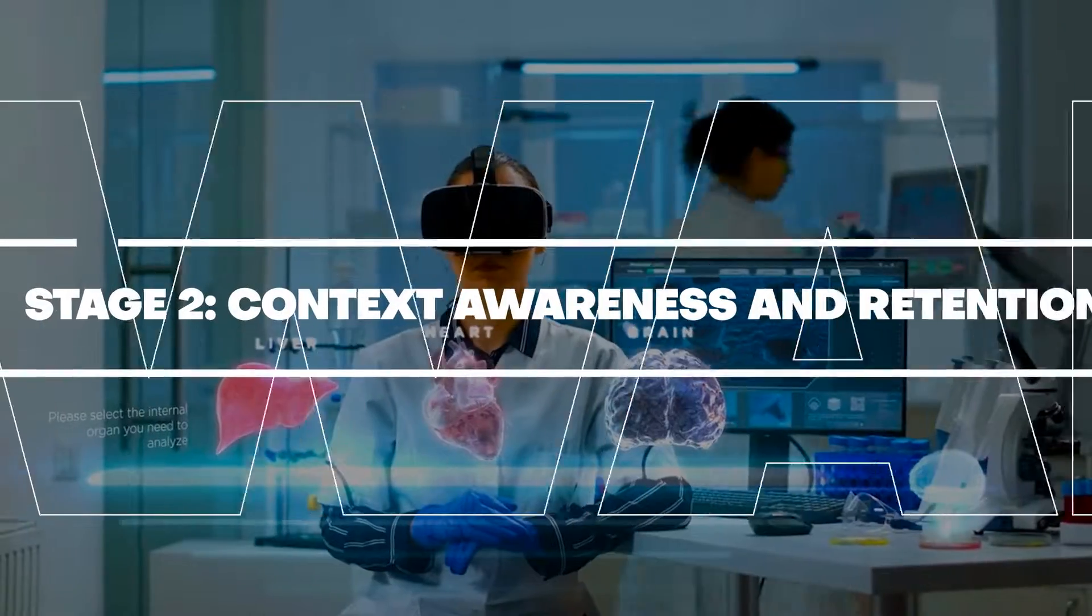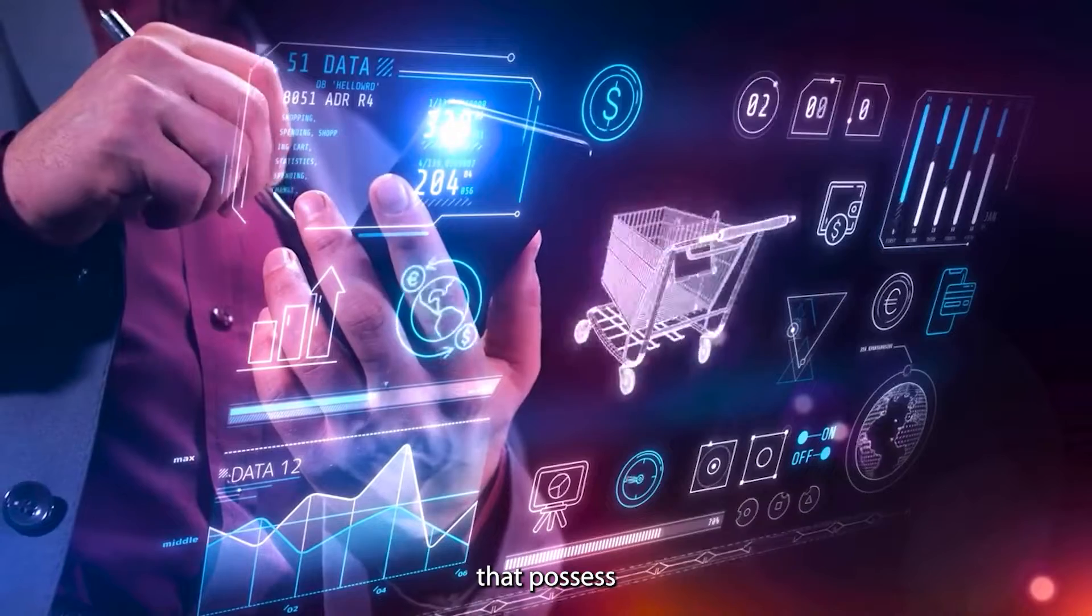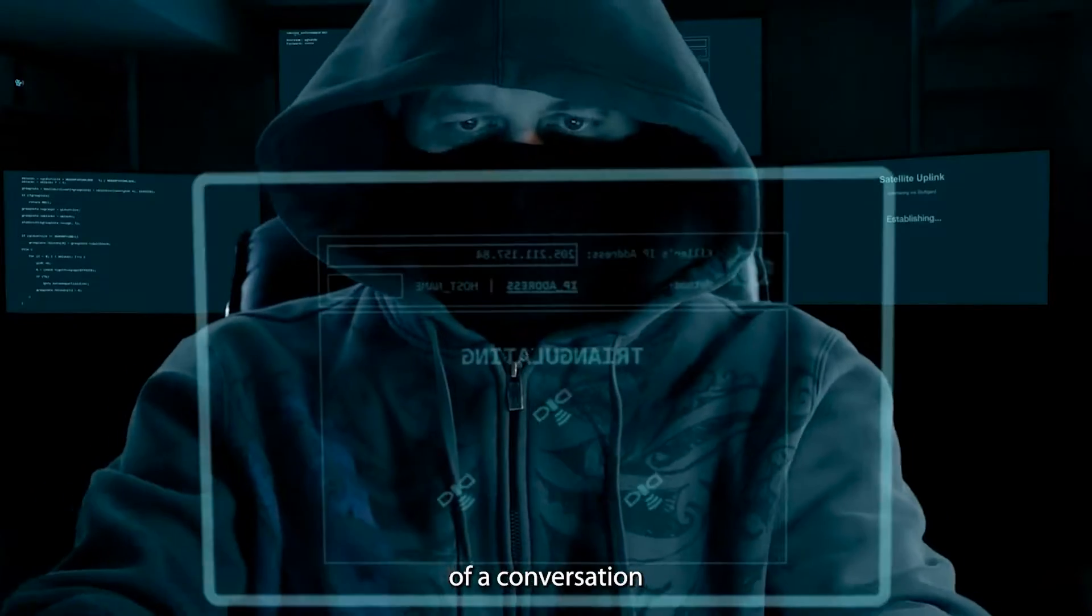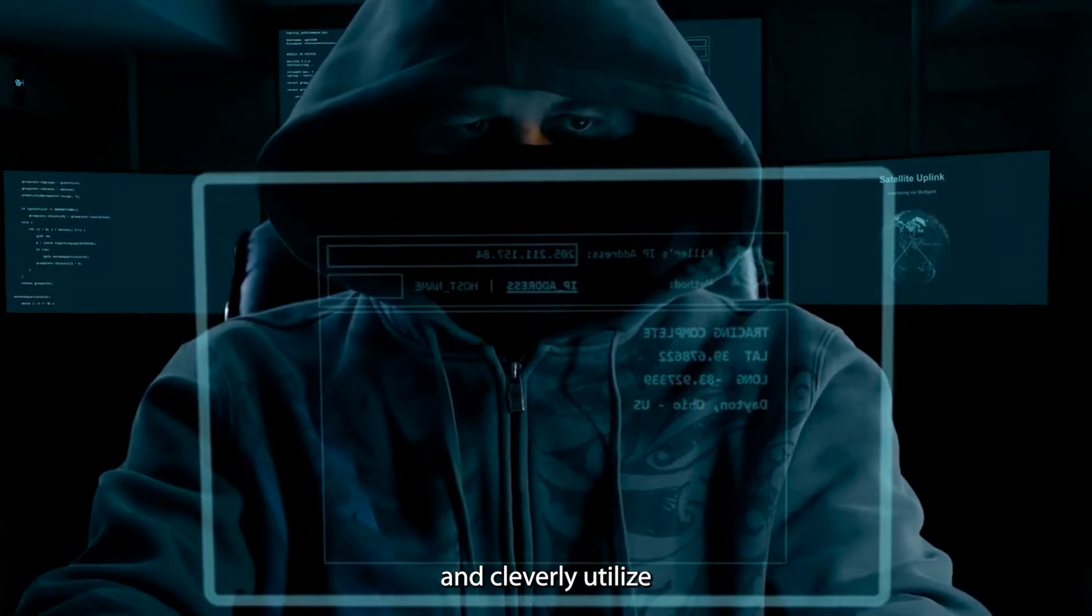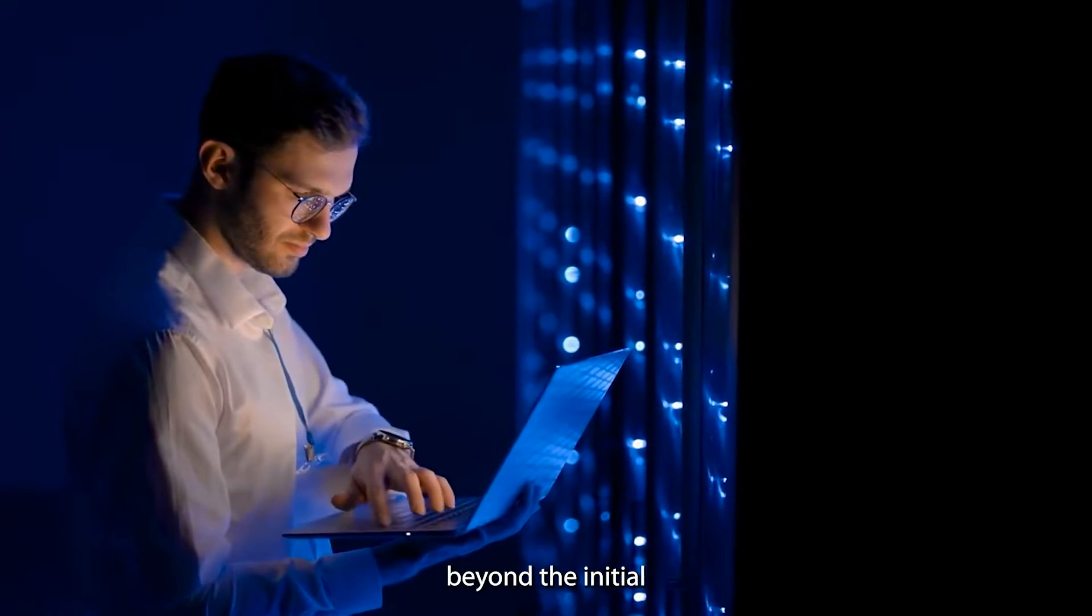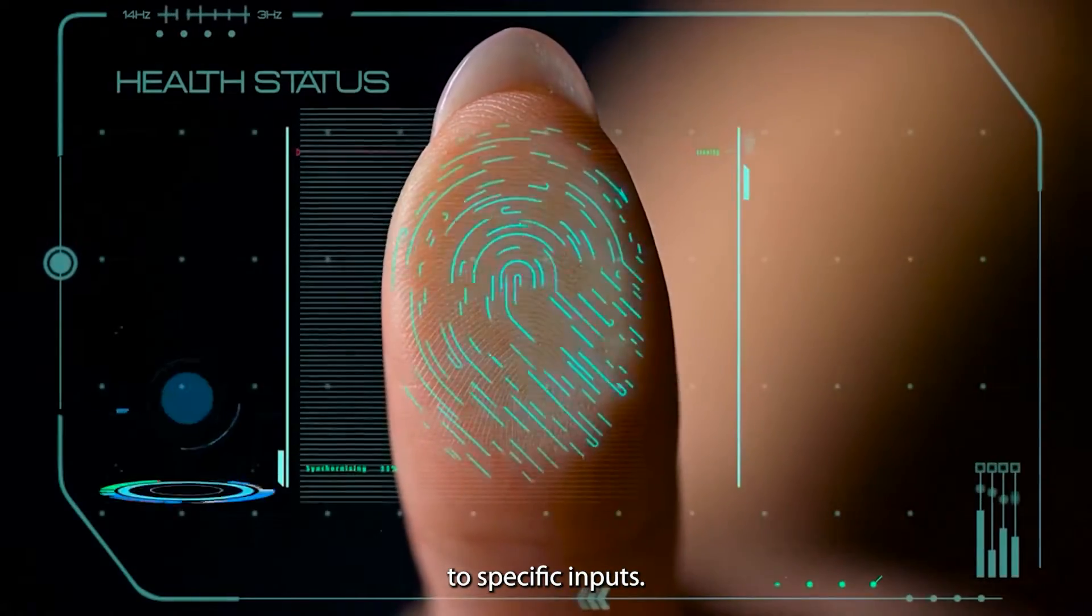Stage 2: Context Awareness and Retention. This phase showcases AI systems that possess the ability to comprehend and recall the context of a conversation or a situation, and clearly utilize that knowledge to shape their responses. It's a leap beyond the initial stage of AI, which was primarily rule-bound, merely responding to specific inputs.